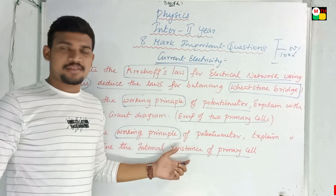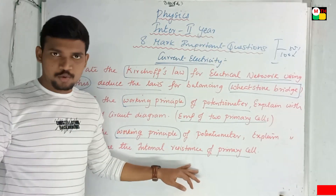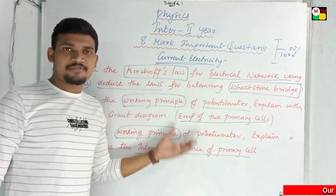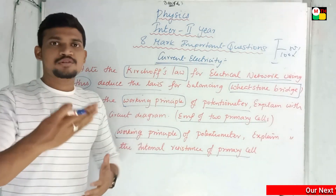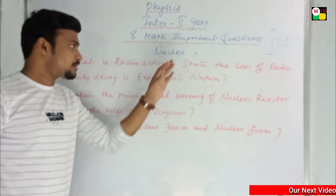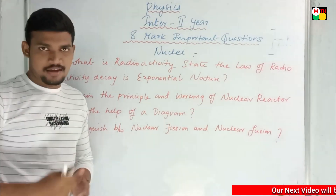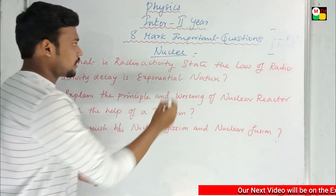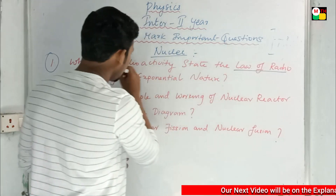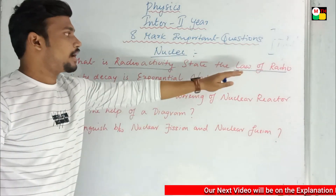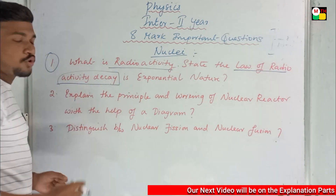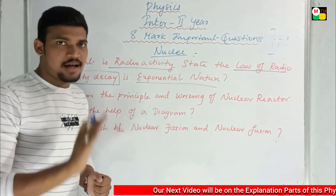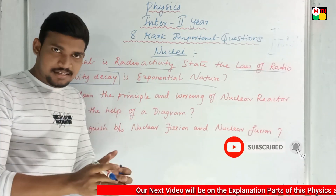I'll be explaining all of these, so you need not worry at all. These are the three important questions from the chapter of current electricity. We have completed two chapters: Waves and Current Electricity. The next chapter is Nuclear Physics — the final chapter. The first question: what is radioactivity? State the law of radioactivity. You need to define radioactivity, write about the law of radioactive decay, and express it in exponential form.